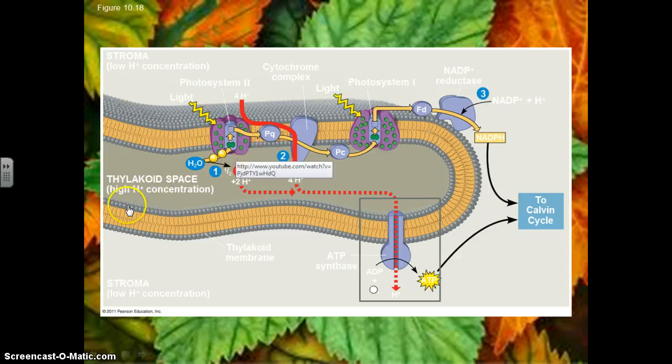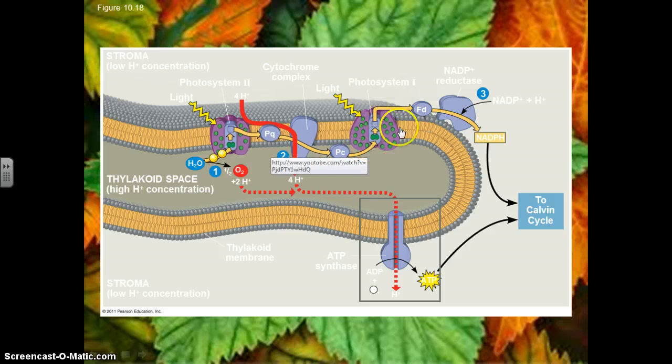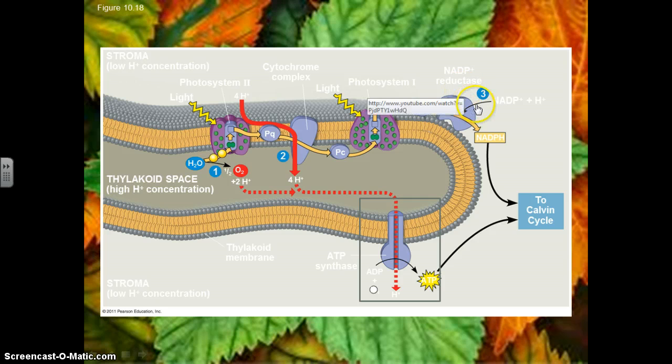I was talking about the electrons that got passed along from photosystem II through all these different transmembrane proteins over to photosystem I, through ferredoxin and into NADP plus reductase. That's going to combine NADP plus and hydrogen, which was taken from the water over here originally, and it's going to create NADPH.